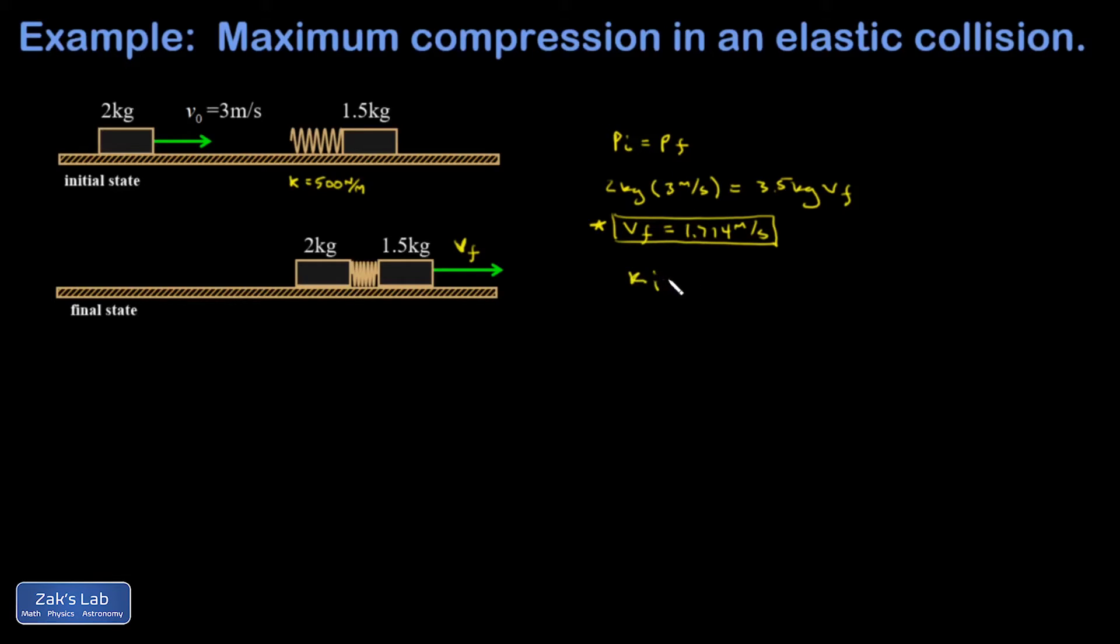So my initial kinetic energy for the system, it's one half times the mass times the speed squared, and I get 9 joules out of that. My final kinetic energy is one half times how much mass is moving, that's 3.5 kilograms, multiplied by the final speed, 1.714 meters per second squared. And out of that, I get 5.14 joules of energy.